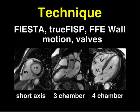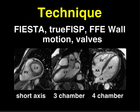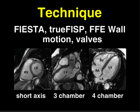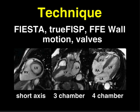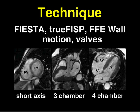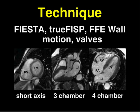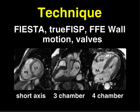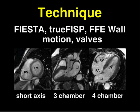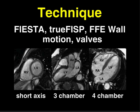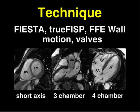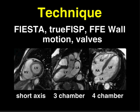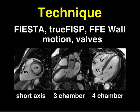The exam usually begins with Cine bright blood images that are particularly good at looking at function. We can look at the contractility of all the walls, see whether the myocardium is thickening normally, and assess the competence of the valves.